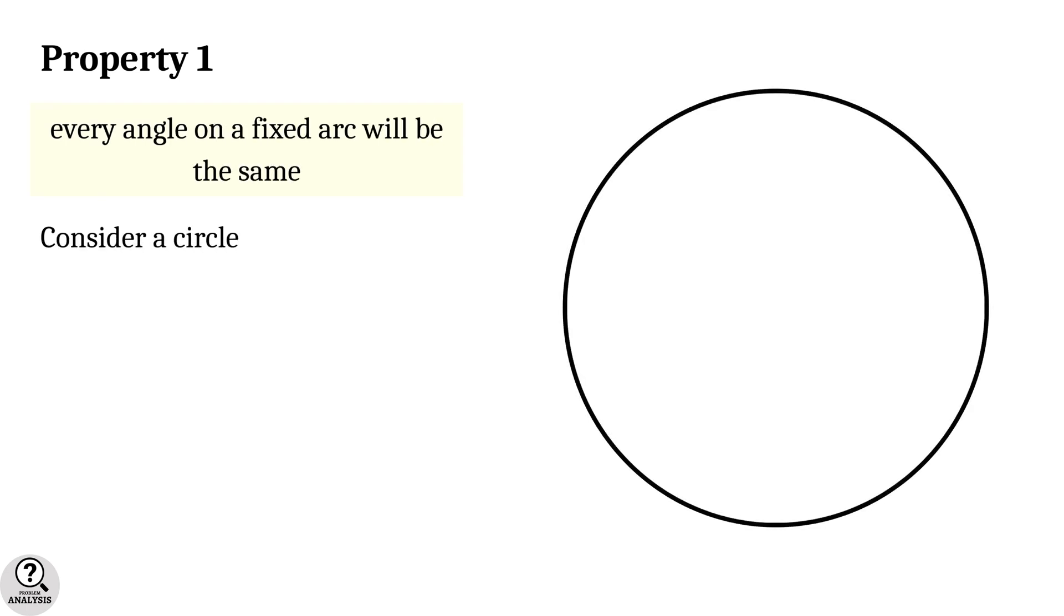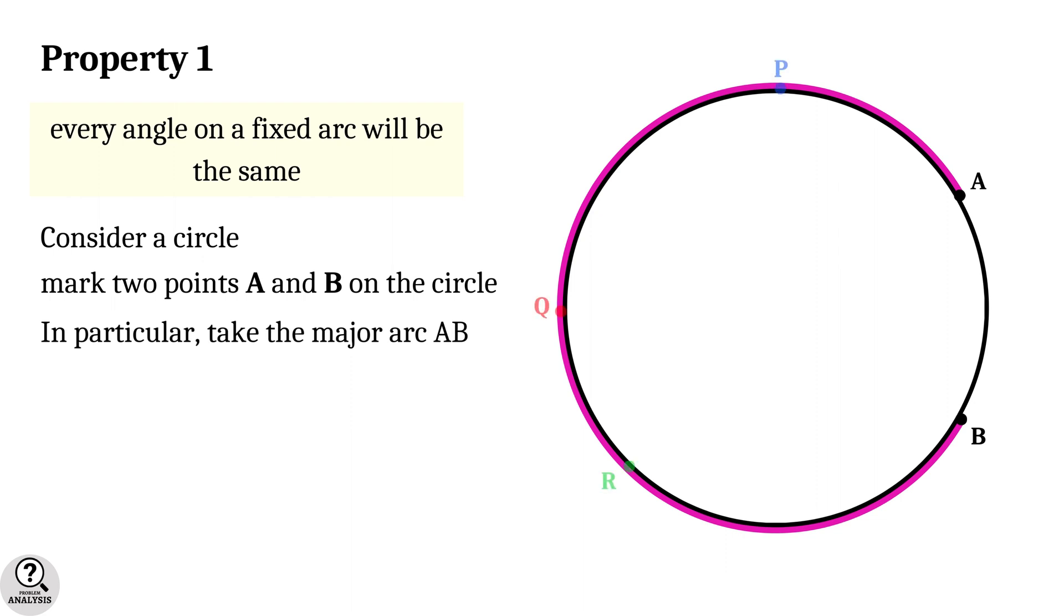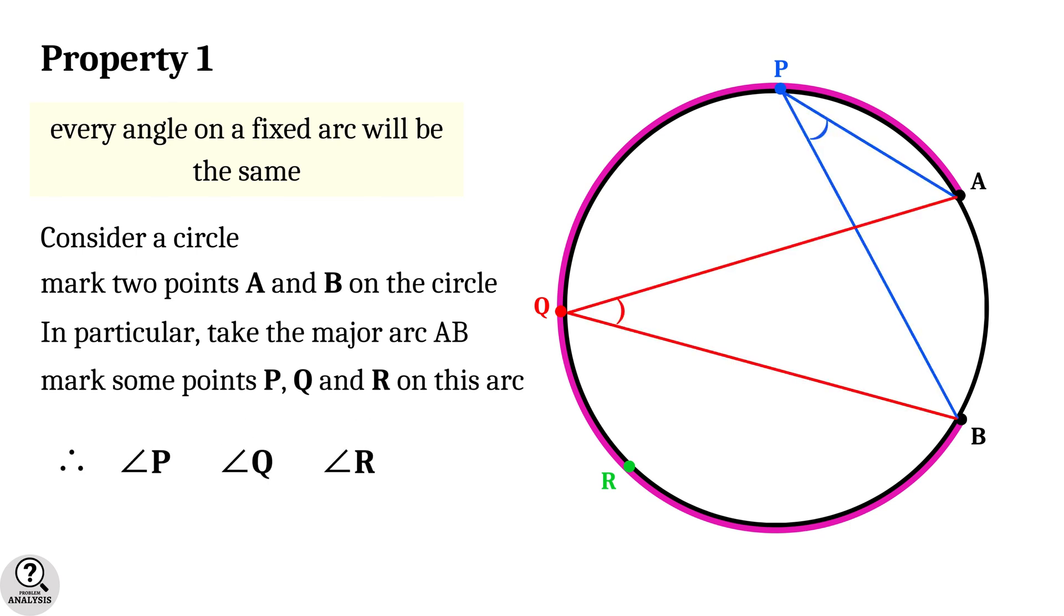Consider a circle. Mark two points A and B on the circle. In particular, take the major arc AB. Now mark some points P, Q and R on this arc. Then the fact is, angle APB, angle AQB and angle ARB will be of same degree.